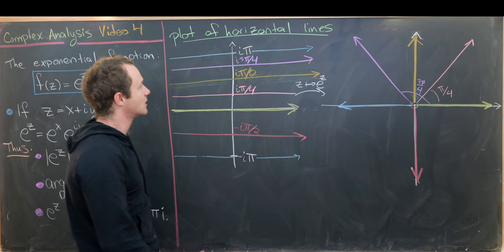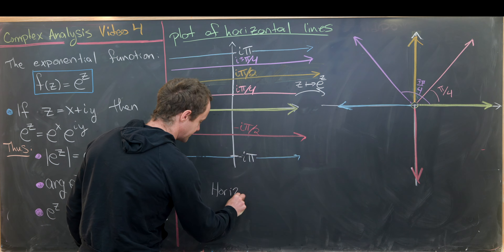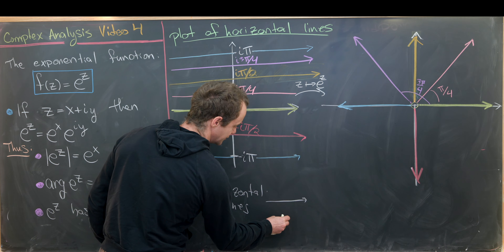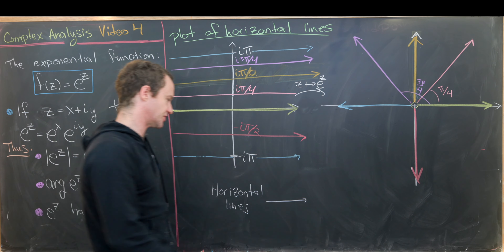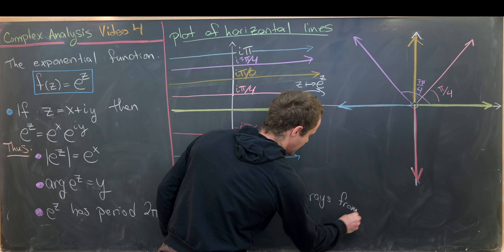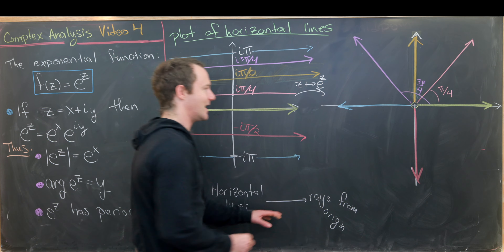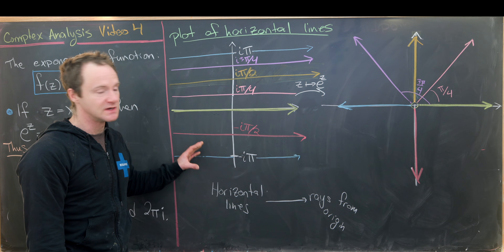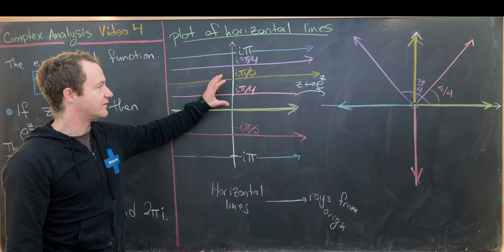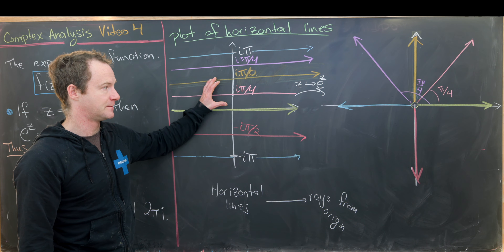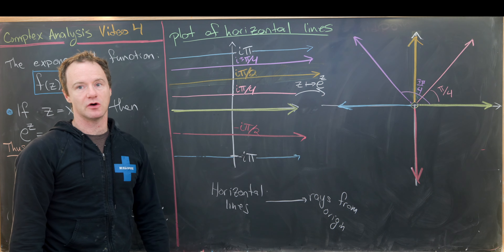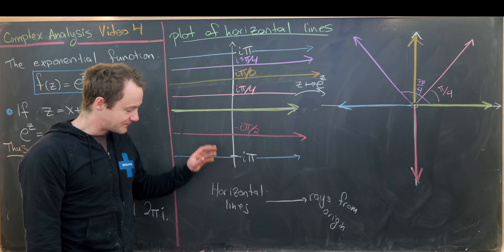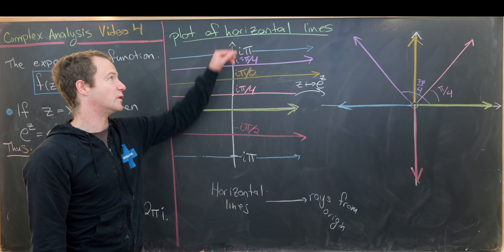The takeaway here is that horizontal lines get mapped under this exponential function to rays from the origin — not including the origin, since we can never land there. So horizontal lines in the domain are mapped to rays from the origin in the codomain under the mapping z goes to e to the z. Let's clean this up and play the same game with vertical lines.